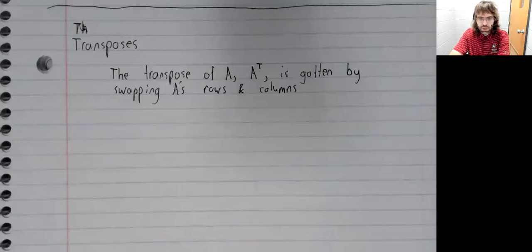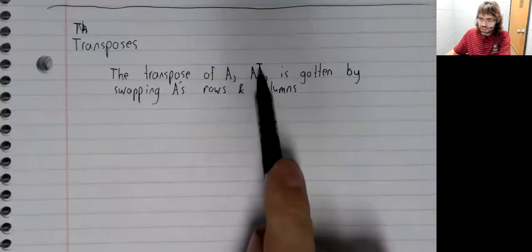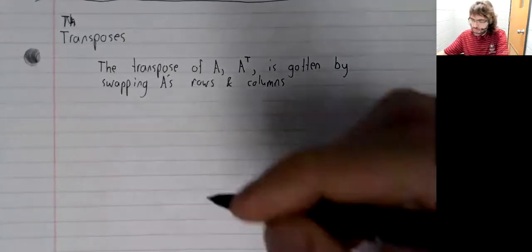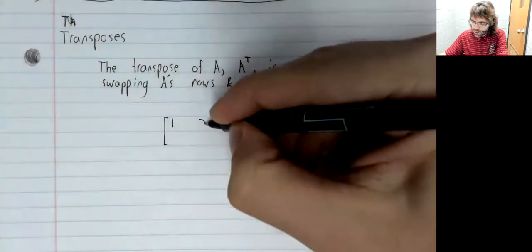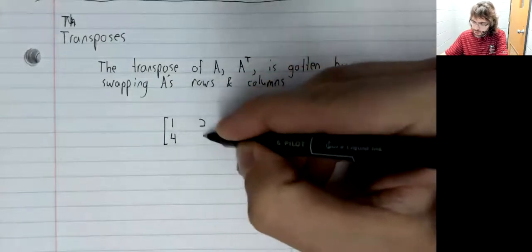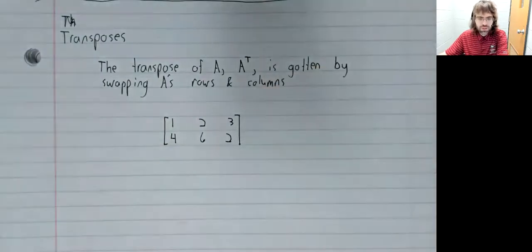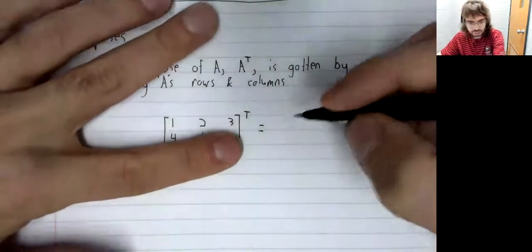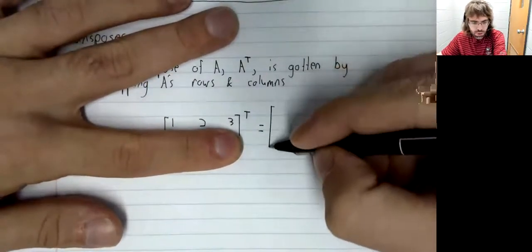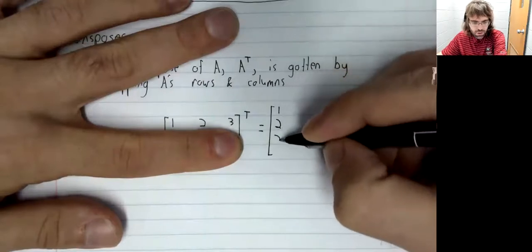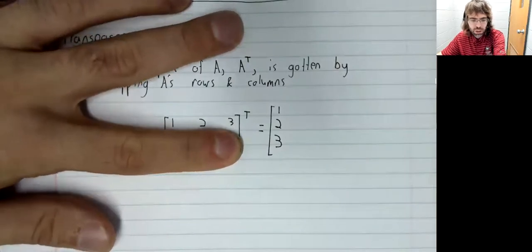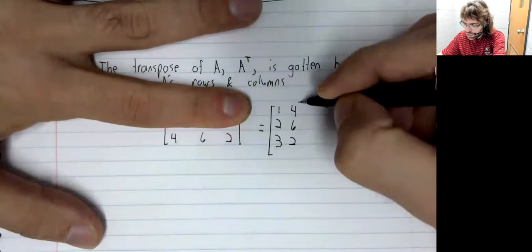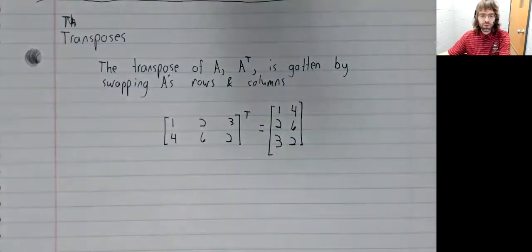The transpose of A, A with a T up in the superscript, is gotten by swapping the rows of A with the columns of A. So say that you have this two by three matrix, and you take its transpose. Then this first row is the first column of the transpose, and this second row is the second column of the transpose.